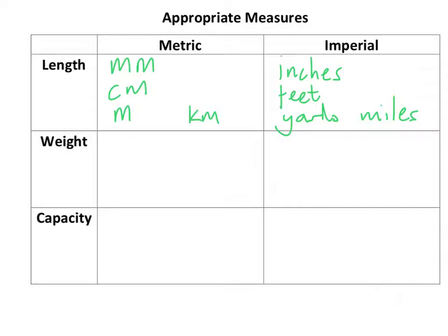Now weight — or mass, some of you might call it mass. In metric you've got milligrams for really light stuff, grams for quite light stuff, kilograms for heavier things like measuring people, and tons for things like cars and lorries.